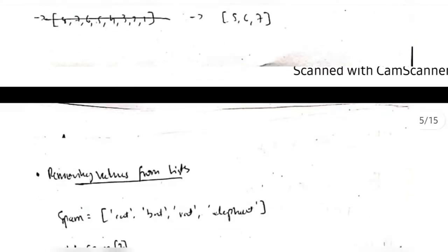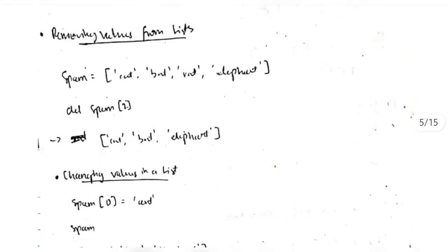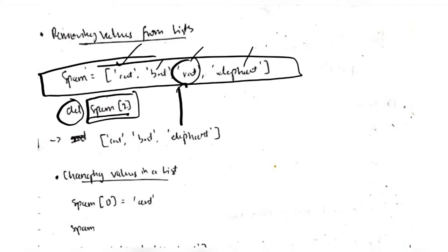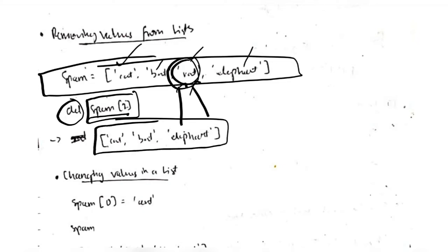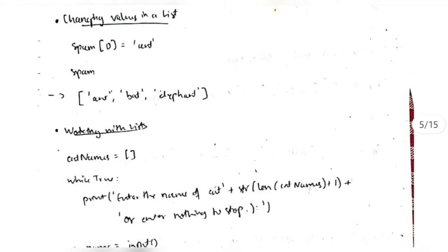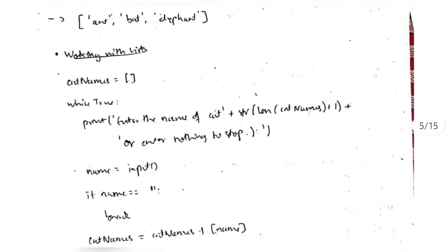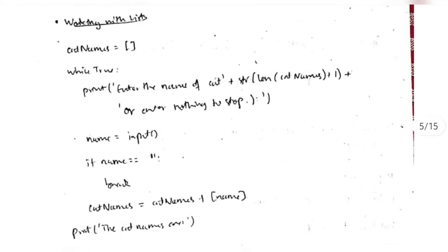To remove a value from the list — suppose the list has 'cat', 'bat', 'rat', and 'elephant' — if I have to delete 'rat', I write the keyword del and spam[2], which accesses 'rat' and deletes it. The output will be 'cat', 'bat', and 'elephant'. To change a value, I write spam[0] = 'ant', so the first element 'cat' becomes 'ant', and the output will be 'ant', 'bat', and 'elephant'. Here is a program that creates a list, uses an infinite while loop, and prints 'enter the name of the cat'.